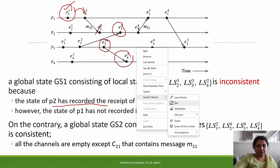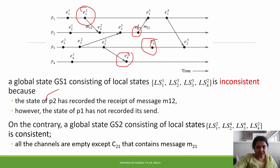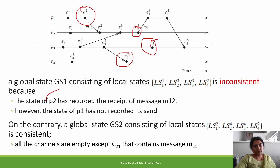In another combination, consider local states LS21, LS42, LS43, and LS44. These represent a different cut through the distributed system execution, forming a consistent global state.